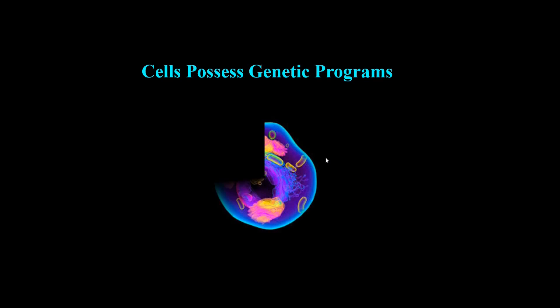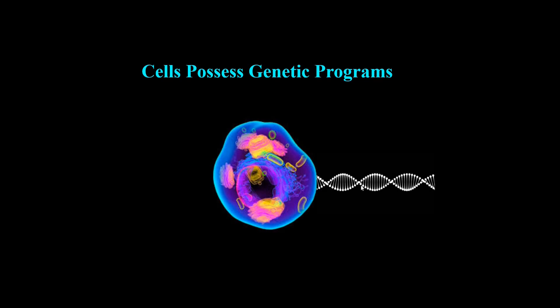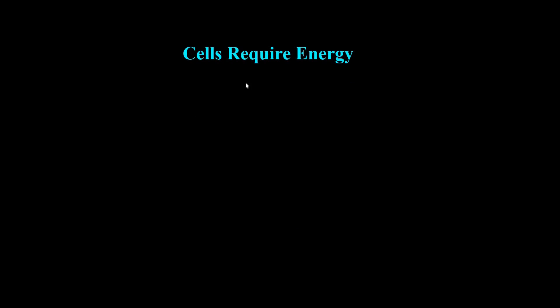Number three: cells possess genetic programs. This means that the information within cells is encoded in a collection of genes. These genes instruct the cell to behave according to specific genetic instructions — for example, to make different structures, to divide, or to perform specific cellular activities urgently required according to the needs of the cell.